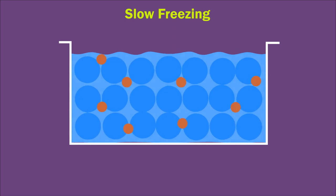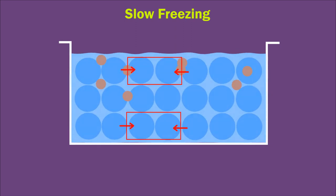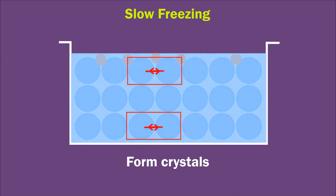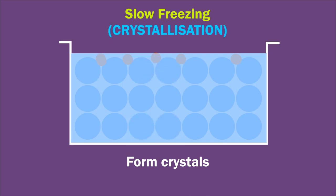When liquid is cooled very slowly, molecules attach to one another in a periodic way and form crystals. And thus slow cooling is also called crystallization.